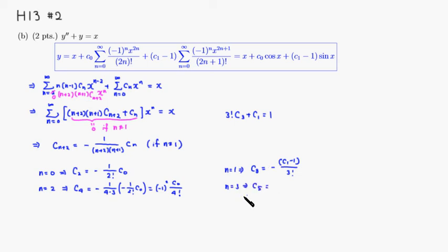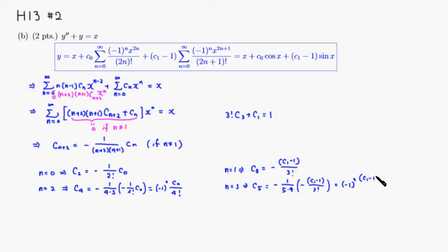For n equals 3: c5 equals negative 1 over 5 times 4 times c3. Substituting c3, we get negative 1 squared times c1 minus 1 over 5 times 4 times 3 factorial, which is c1 minus 1 over 5 factorial times negative 1 squared. We can now see the pattern: the even coefficients follow c sub 2n equals negative 1 to the nth power times c0 over 2n factorial.